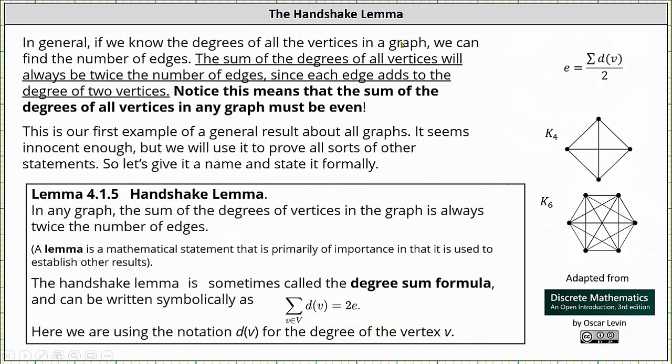In general, if we know the degrees of all the vertices in a graph, we can find the number of edges. The sum of the degrees of all vertices will always be twice the number of edges since each edge adds to the degree of two vertices. Notice this means the sum of the degrees of all vertices in any graph must be even. And that's true because if the sum of the degrees of all the vertices will be twice the number of edges, the number of edges E is equal to the sum of the degrees of all the vertices divided by two. In order for the number of edges to be a whole number, the sum of the degrees must be even.